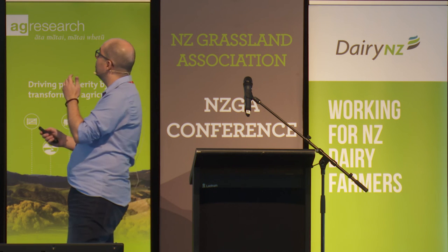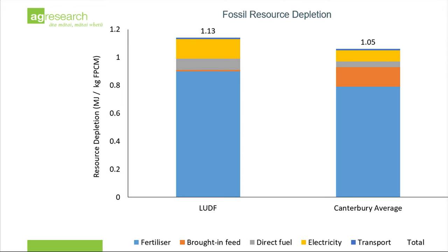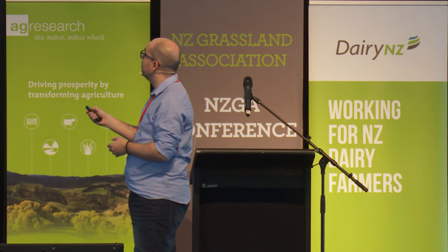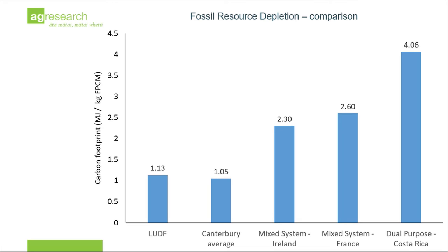Looking at the fossil resource depletion, there is some difference between the two farms. LUDF ends up having more use of fossil fuel because of fertilizer mainly, and also more electricity — the yellow bar — which can be connected to irrigation used on the farm. But you can see from the orange bar the difference between the brought-in feeds and its influence on the final footprint. Both farms are almost half of mixed systems with confinement and pasture-based, and in tropical climates with dual-purpose systems, it can be almost four times what we have here in New Zealand.